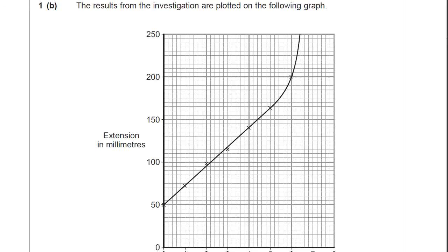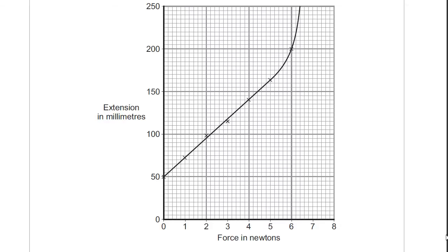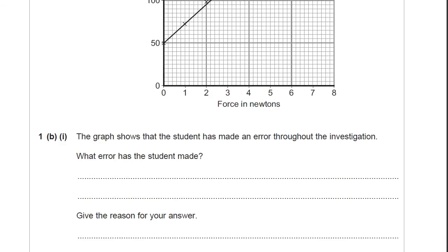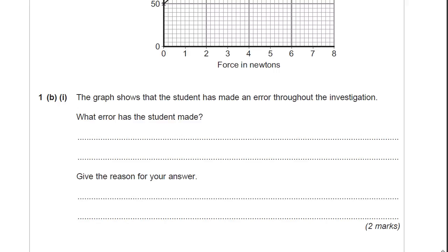Let's scroll down to the next part of this question. Results from the investigation are plotted on the following graph. This is a force extension graph, and you can expect the next two questions to be about this graph. Let's read them to see what it wants us to do with the graph before we start to analyze what the graph is about. The graph shows the student has made an error throughout the investigation. What error has the student made? Now I want to highlight for you this bit here. The graph shows an error throughout the investigation. That is an important statement. Not just one error on one of the readings, but he's made this error throughout the whole thing he's done.